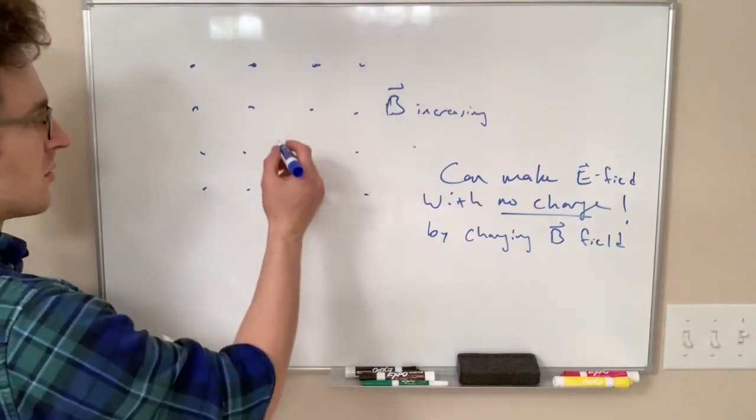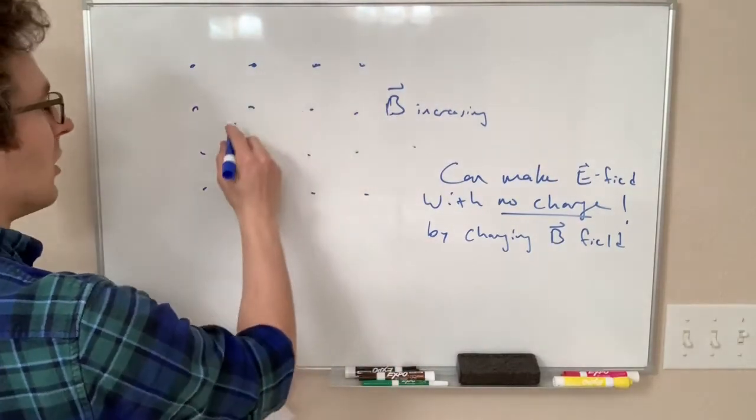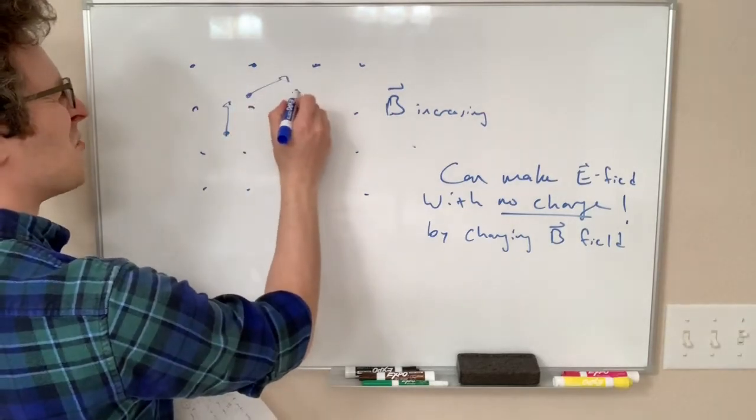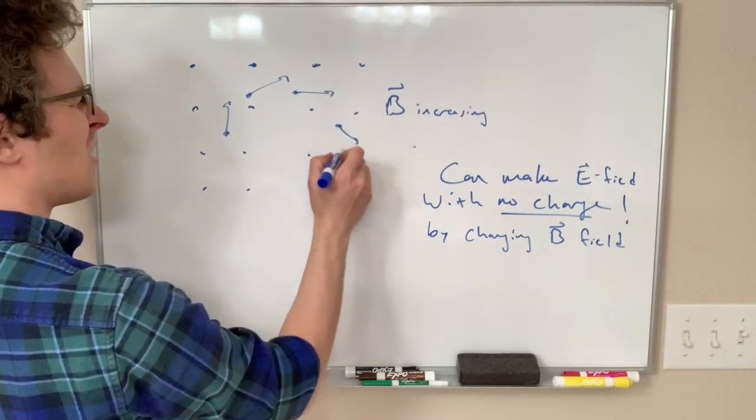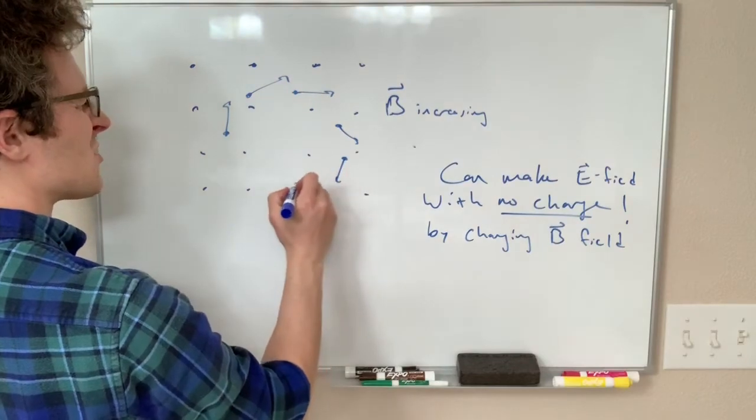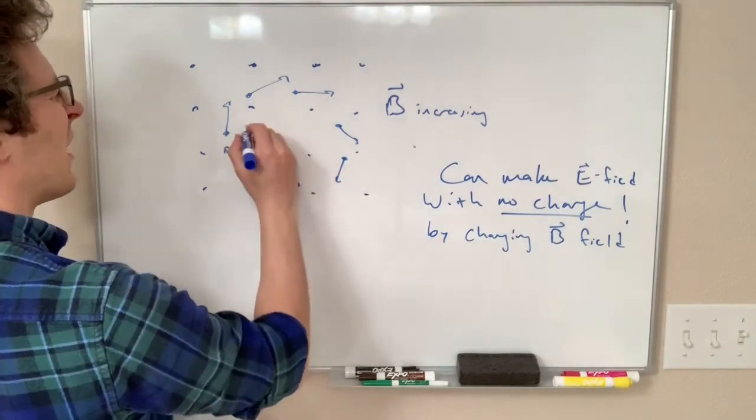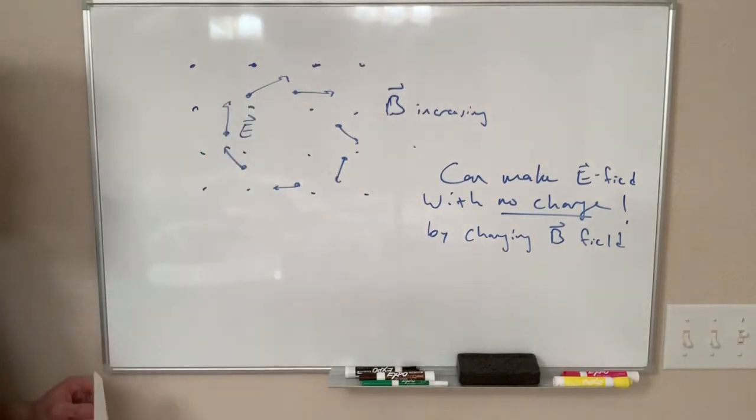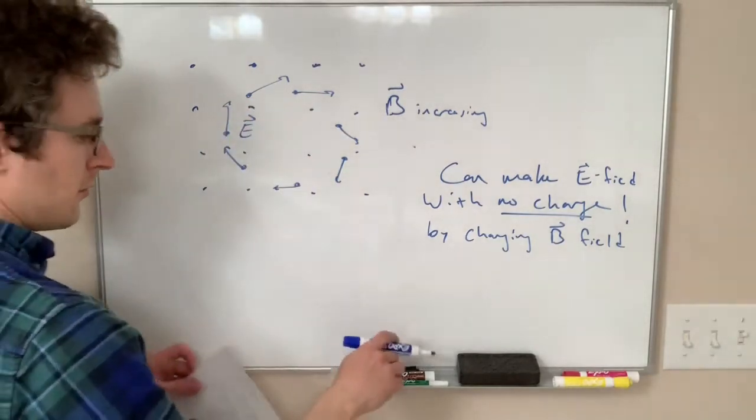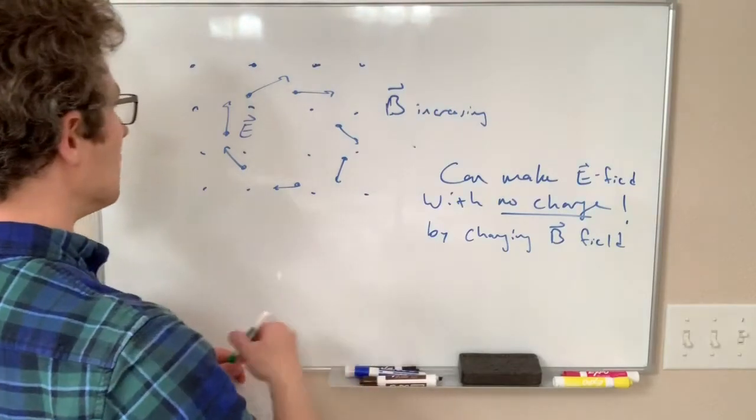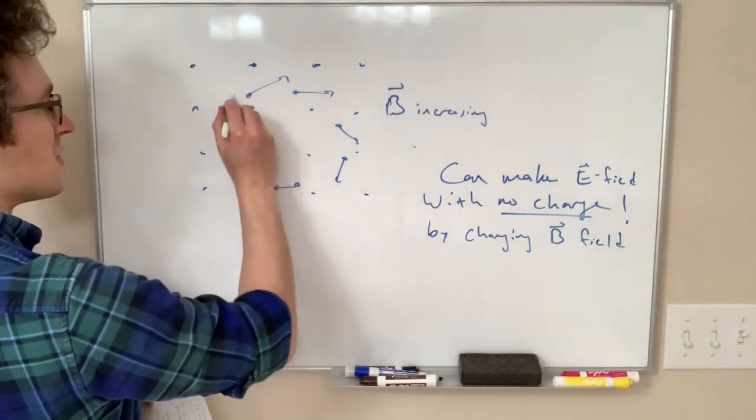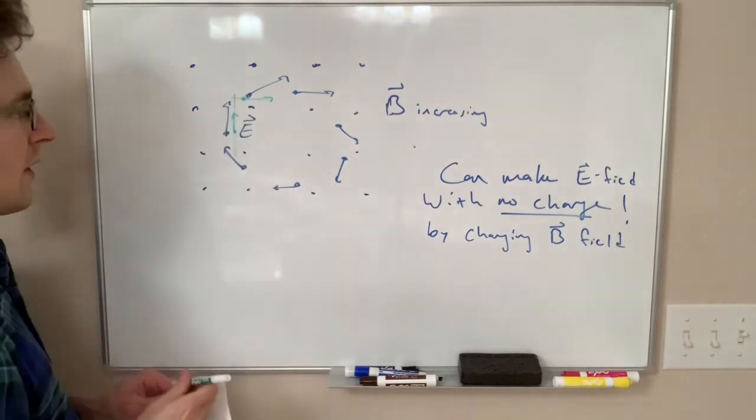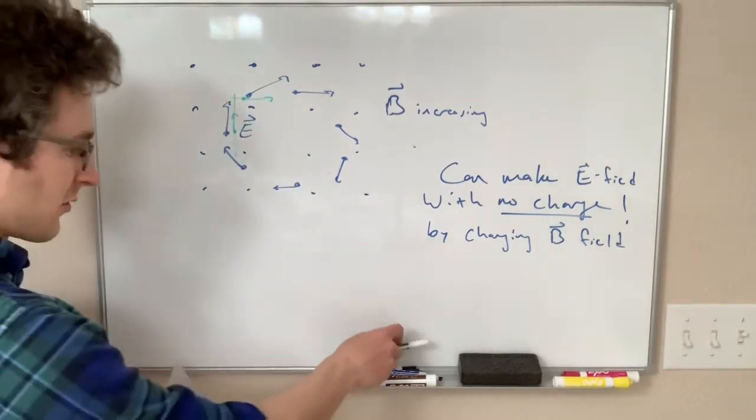if we could kind of guess the direction it's going to go. So if B is increasing out of the board, we're going to end up with an electric field that is at various points pointing in this clockwise circle around here. So these are all our E field vectors that are going like this. So if we imagine our metal loop, at these points, the charges in here are going to feel a force clockwise around the wire because of this electric field.